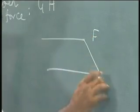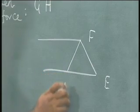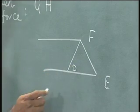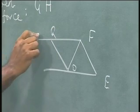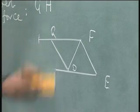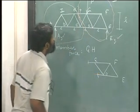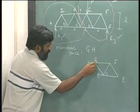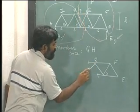This is FE. We have D, we have G. This is cut. DC is, CD is cut. What else is cut? There is a member going like this which is CG that is also cut.